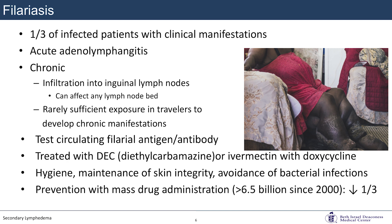One-third of infected patients will have clinical manifestations — there are many patients in these areas that have filariasis but don't demonstrate lymphatic dysfunction. There's an acute phase with adenolymphangitis: fever, swelling, and discomfort of lymph nodes. The chronic phase involves infiltrations of the inguinal lymph nodes most commonly, but it can affect any lymph node bed. You need multiple insults and exposure to the parasite — rarely is it someone who took a two-week trip to Indonesia. It's usually patients who have lived in that area and immigrated to the U.S. It can be tested through blood tests and treated to eliminate the parasite, but unfortunately the sequelae and damage to the lymphatics persist.